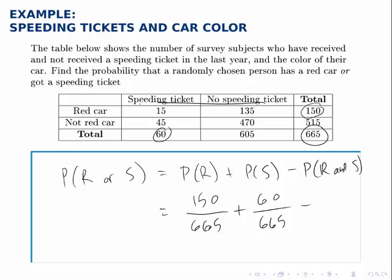Because what we've done is we've added up this row and this column which double counted this overlap, the overlap of 15, so we need to subtract off 15 out of 665.